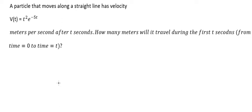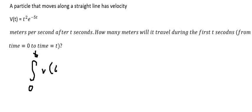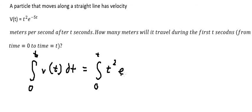Hello everybody. Today I will talk about calculus. The topic today is about applications of integration. The question asks: how many meters will each travel during the first two seconds? So we need to use the integral from 0 to T of V(T) dT. So we have the integral from 0 to T of t squared times e to the power of negative 5t dT.